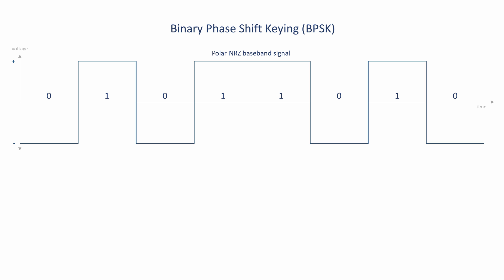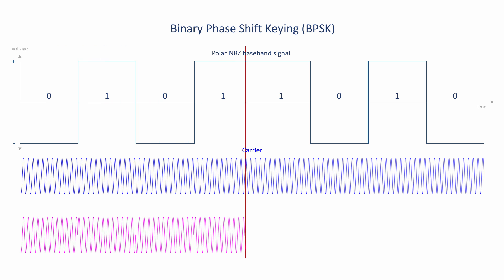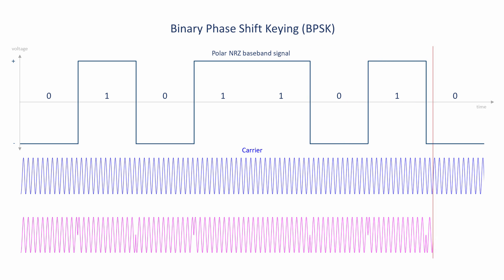One symbol after another, the square wave is multiplied by the carrier, as is the case with amplitude modulation. But, because the modulating signal is an NRZ signal, the carrier is inverted whenever there's a change from 1 to 0, or 0 to 1.